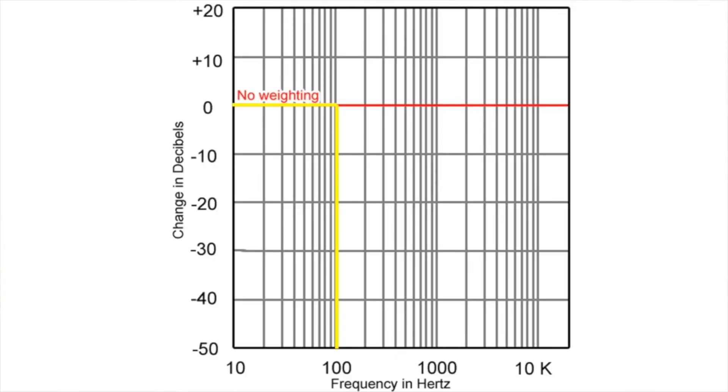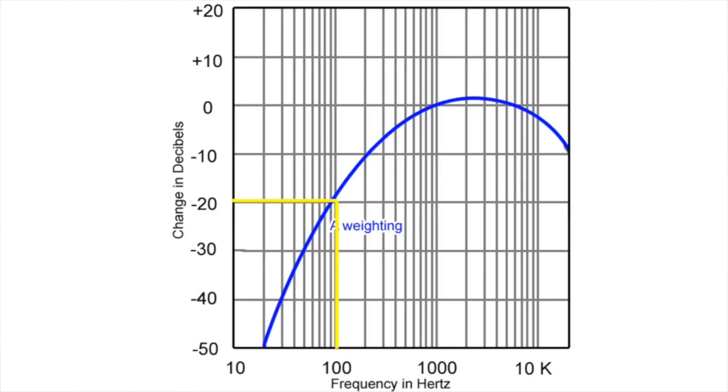Let's say the only sound in the space is a 50 dB, 100 hertz tone. If you have no weighting on your SPL meter, it will apply no change to the input. As a result, it will tell you that there are 50 dB of sound in this space. If you have A-weighting turned on, it will apply negative 20 dB of change to that frequency. An A-weighted SPL meter would measure a 50 dB 100 hertz tone as 30 dB.